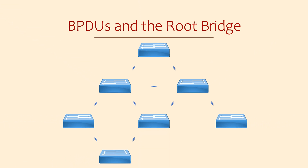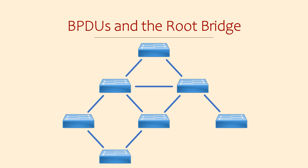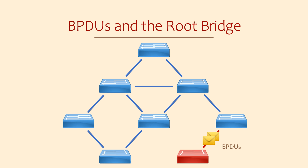We know why we need Spanning Tree, so let's now look at how it works. There are a few different versions of Spanning Tree. We're going to focus on the original version for now just to understand the basics, and then we'll look at the improvements offered in RSTP later. The first piece of the Spanning Tree puzzle is the BPDU, or Bridge Protocol Data Unit. This is a message that switches start sending out their interfaces from the moment they come online. Each switch will see the BPDUs from other switches — this is how they initially discover each other and learn details about their neighbours.